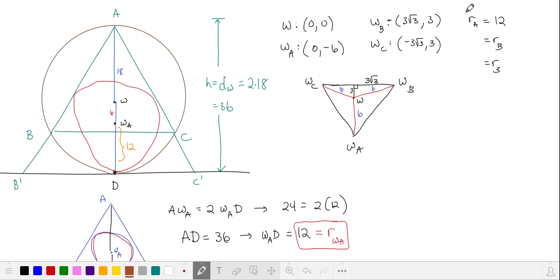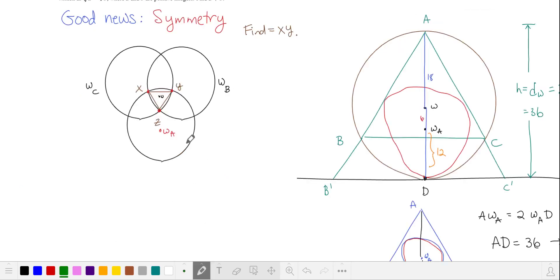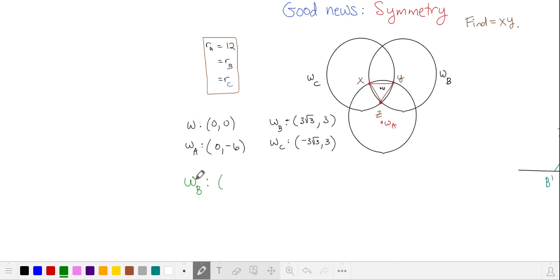Now that we know the centers of our three circles and we know that the radius of all three is 12, we can write equations for these three circles. In particular, I'm interested in circles omega b and omega c. That will enable me to find the intersecting point z. We'll write the equation for circle omega b and circle c.